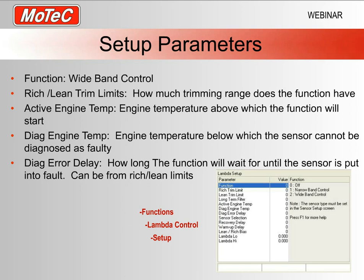The diagnostic engine temperature is a bit of logic on the function as to when it operates. We don't want the sensor to be diagnosed as faulty while the engine is still cool. As a rough guide, the default setting is about 70 degrees — about 10 degrees below the active engine temperature — so it's probably a good starting point.